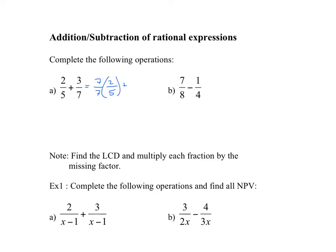For the second fraction, we're missing a factor of 5, so we multiply it by 5 over 5. Notice that by multiplying by 7 over 7 or 5 over 5, you're multiplying by 1, which does not change the value of the expression. So we end up with 14 over 35 plus 15 over 35, and you simply add the numerators to get 25 over 35.